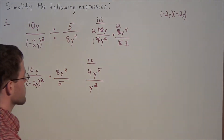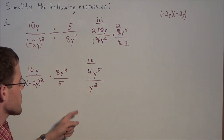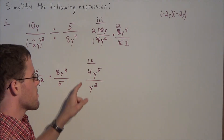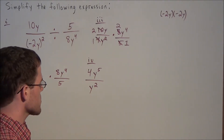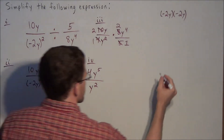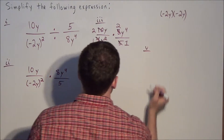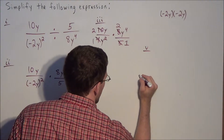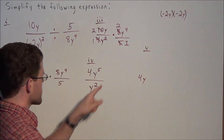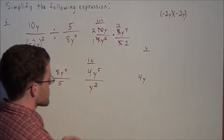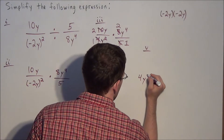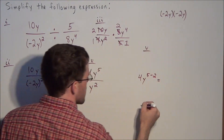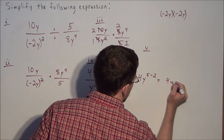To finish this problem, we use the division property for exponents. For line 5, we have 4y to the 5 minus 2, which gives us 4y to the 3rd.